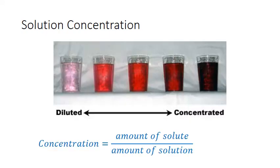Solutions can have variable composition, meaning a solution may contain a lot of solute or just a little. To describe a solution well, you must define both the identity of the solute and solvent, as well as their relative proportions. Terms like dilute and concentrated allow qualitative description, but concentrations allow a much more precise definition. A concentration is simply a mathematical expression of the amount of solute in a given amount of solution.